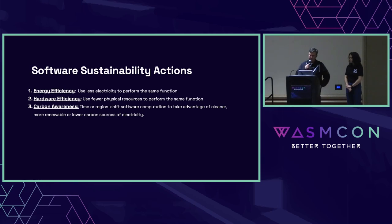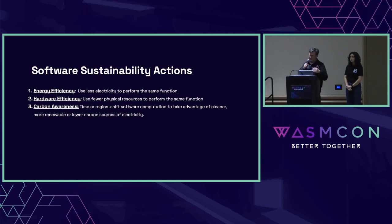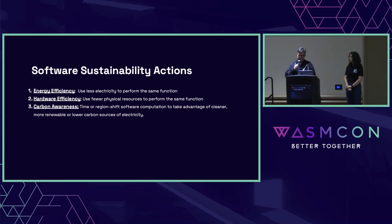Try to make your best choices about software platforms — run ones that are more efficient — and same thing with the hardware side. That's what this whole talk is: to give you the power and let you know how you can make changes. From the Green Software Foundation, for energy efficiency the idea is to use less electricity while running your software. Choose your hardware so you're using fewer resources to perform the same tasks. And be aware of carbon — like simply changing times of day when you run your tests, or region shifting, moving from something carbon-intensive to something with a lot more solar.